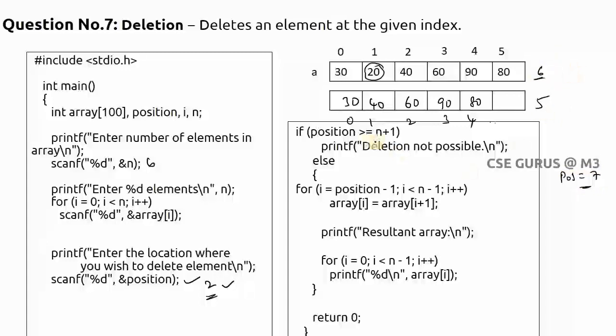So that means if it exceeds, definitely you can say that deletion is not possible. That means we need to enter the position value within the range. So if you give greater than, it will print as deletion is not possible. Else, of course it is within the range. Then what I need to do? So I am just going to the position minus 1. Let us suppose position is 2, I am directly going to 2 minus 1, so till 1.